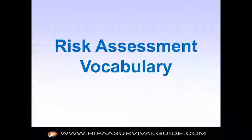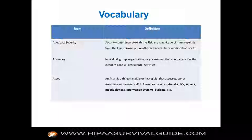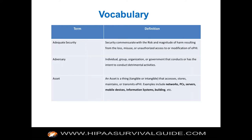Getting comfortable with the lingo is important. An asset is a thing — tangible or intangible — that accesses, stores, maintains, or transmits ePHI: networks, servers, mobile devices, information systems, buildings, rooms. All these things are assets, and security controls get applied to assets. At a minimum, you have to have an inventory of your assets that do something with ePHI. Get started on that inventory process.